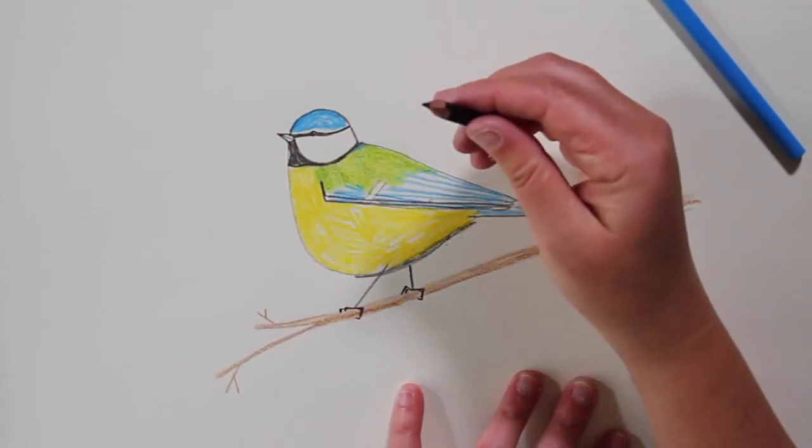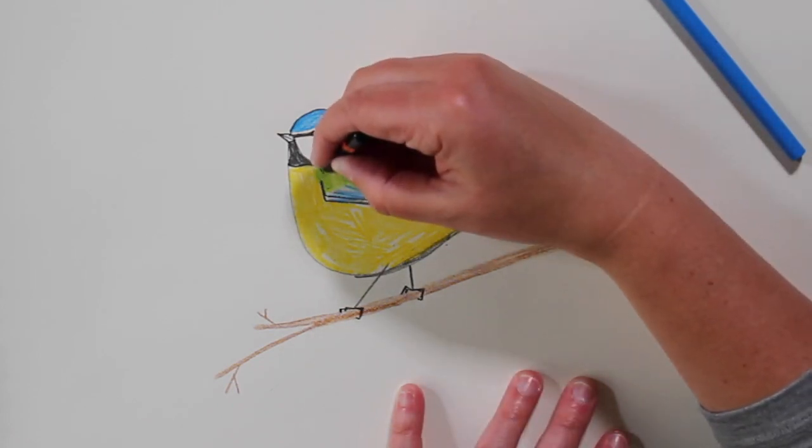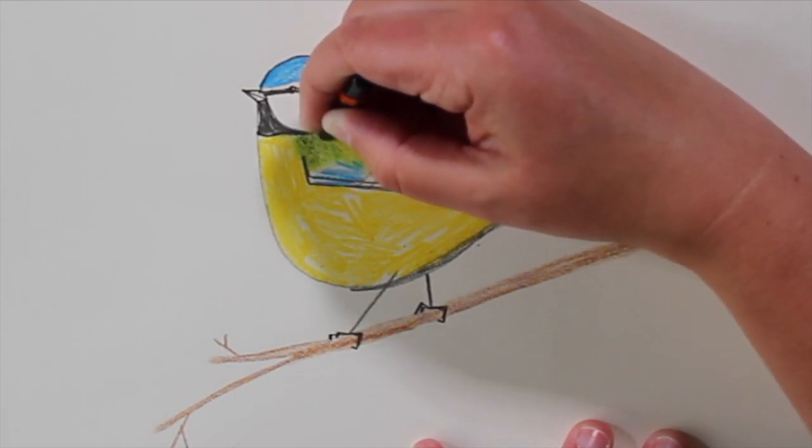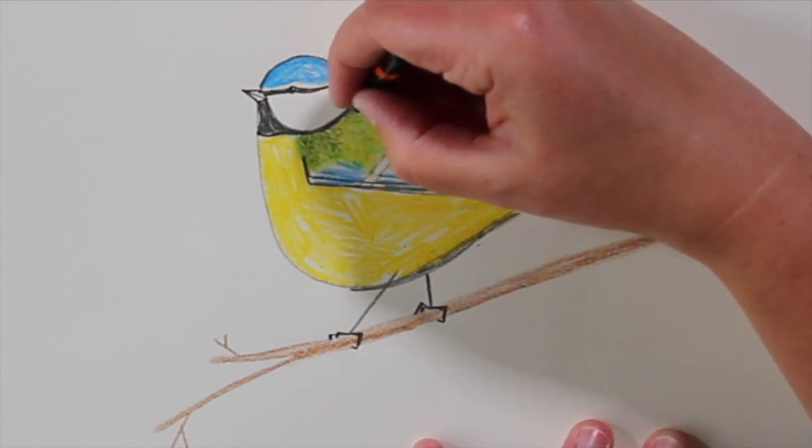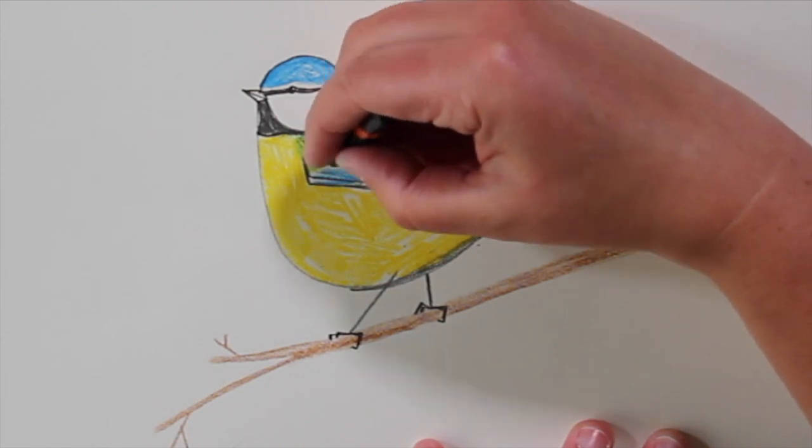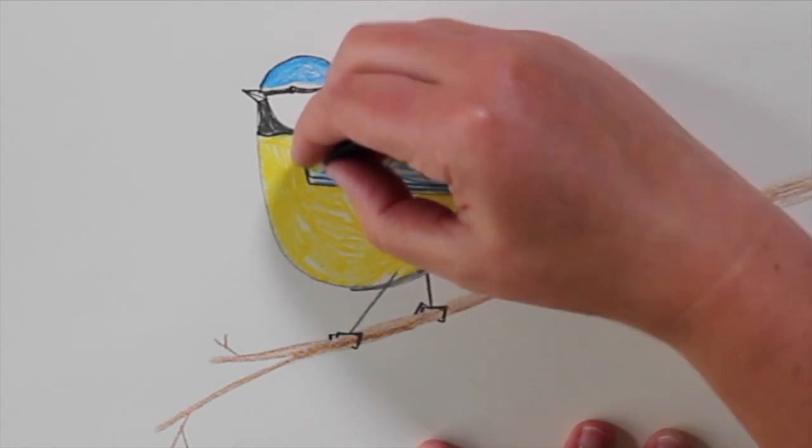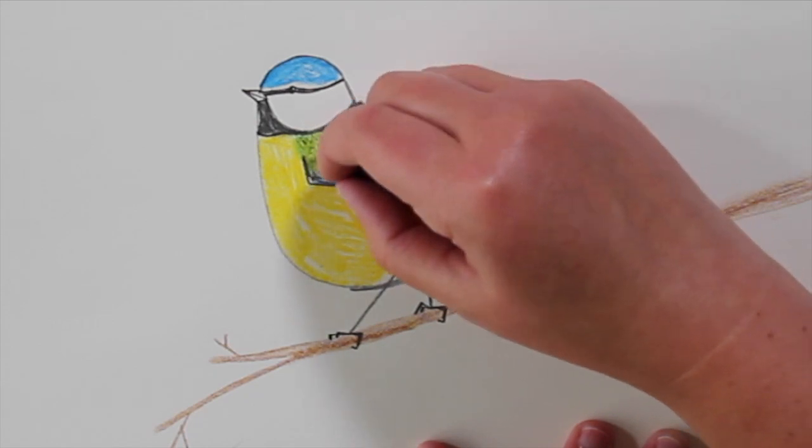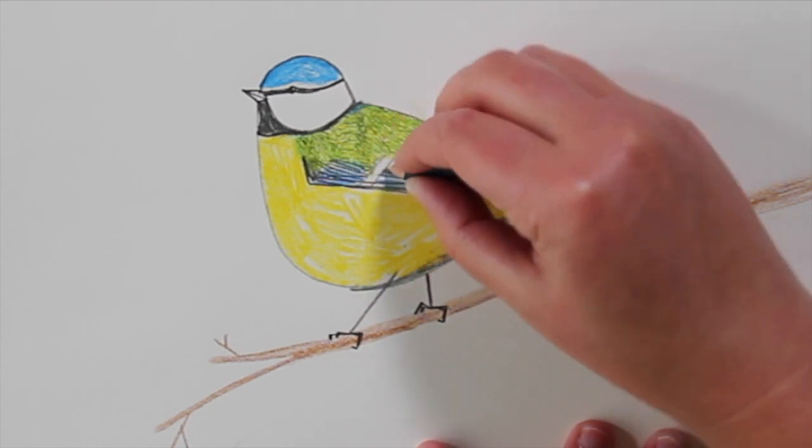And we're going to pick our pencil back up again and start to just draw in some tiny, tiny feathers. If you think, the blue tit is so tiny and they need to have tiny, tiny feathers up here. I'll just speed this bit up. And then on the edge of their wings, the lines of each of the longer feathers are a bit more obvious.